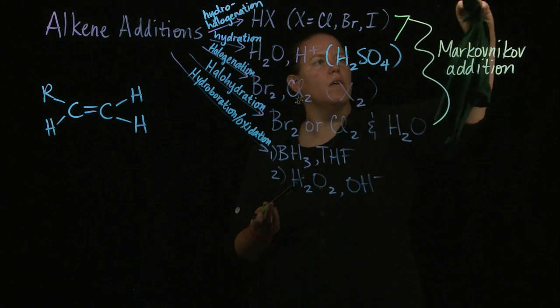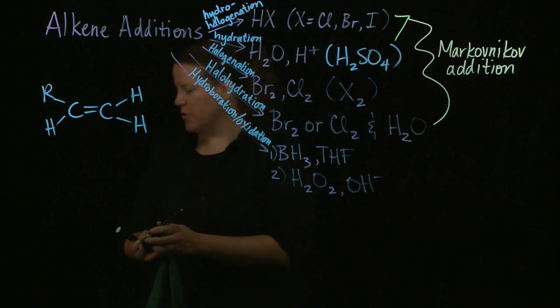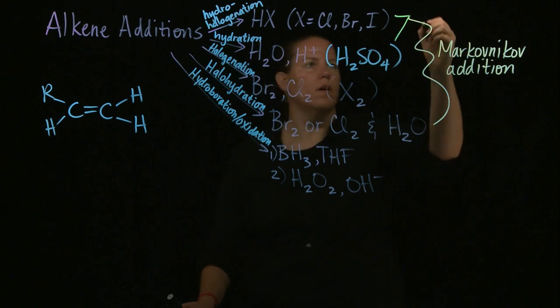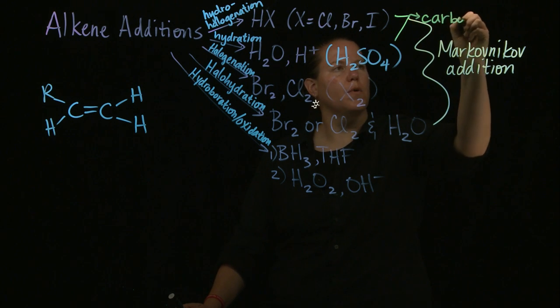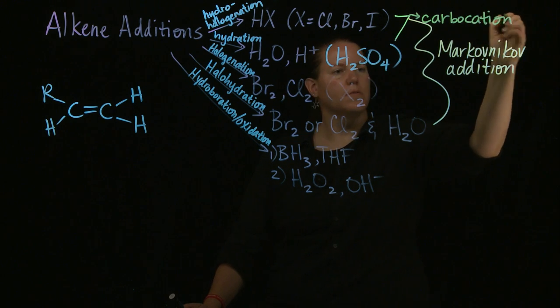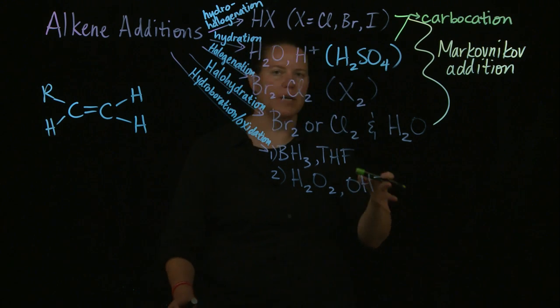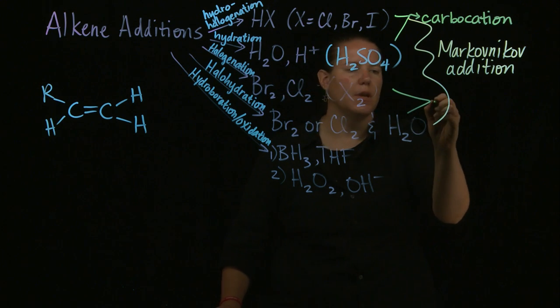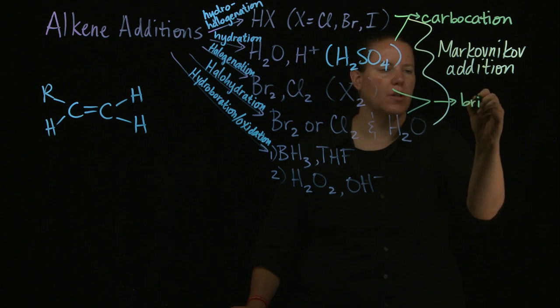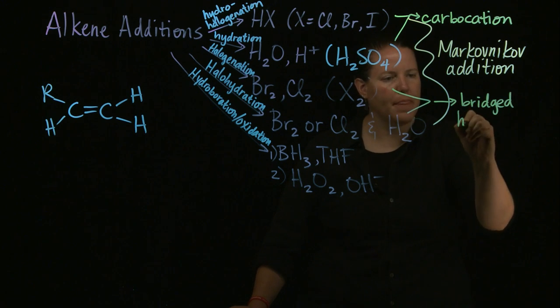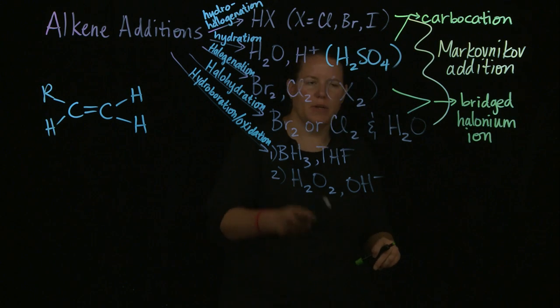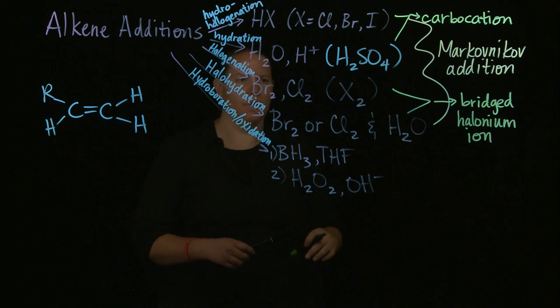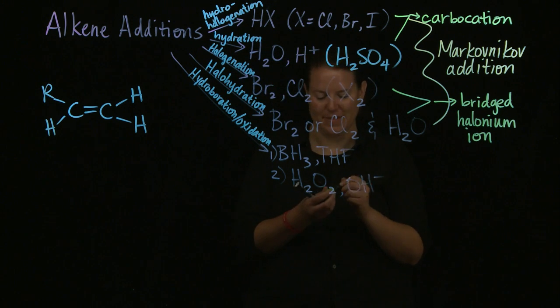These first two reactions have what we call a carbocation intermediate, which means that it's going to form a plus on one of the carbons. These two have what we call a bridged halonium ion intermediate.